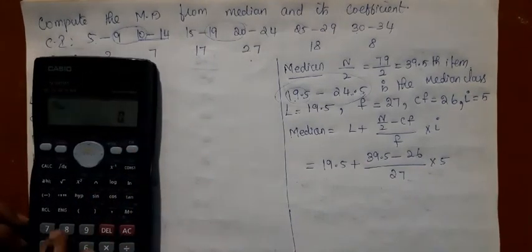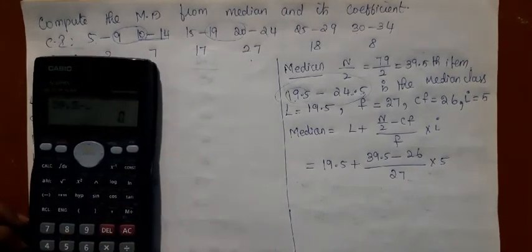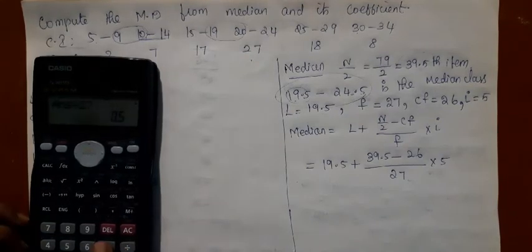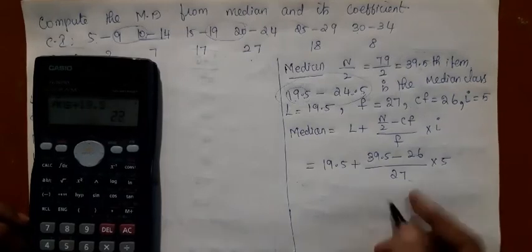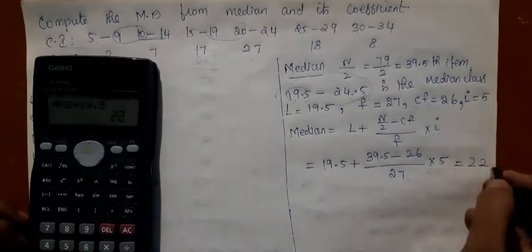So 39.5 minus 26 divided by 27 into 5 plus 19.5. You get 22 as the answer.